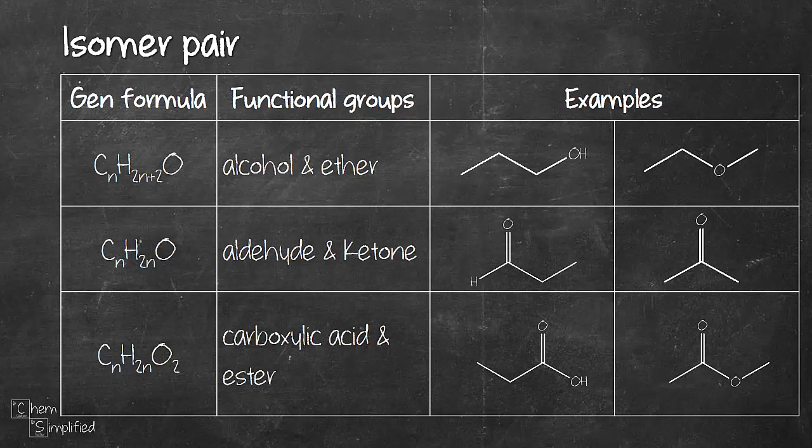And lastly, if you have CnH2nO2, draw out the isomers for carboxylic acid and esters. These are the common pairs when it comes to drawing out isomers. So that's all I have for defining homolog and isomer.